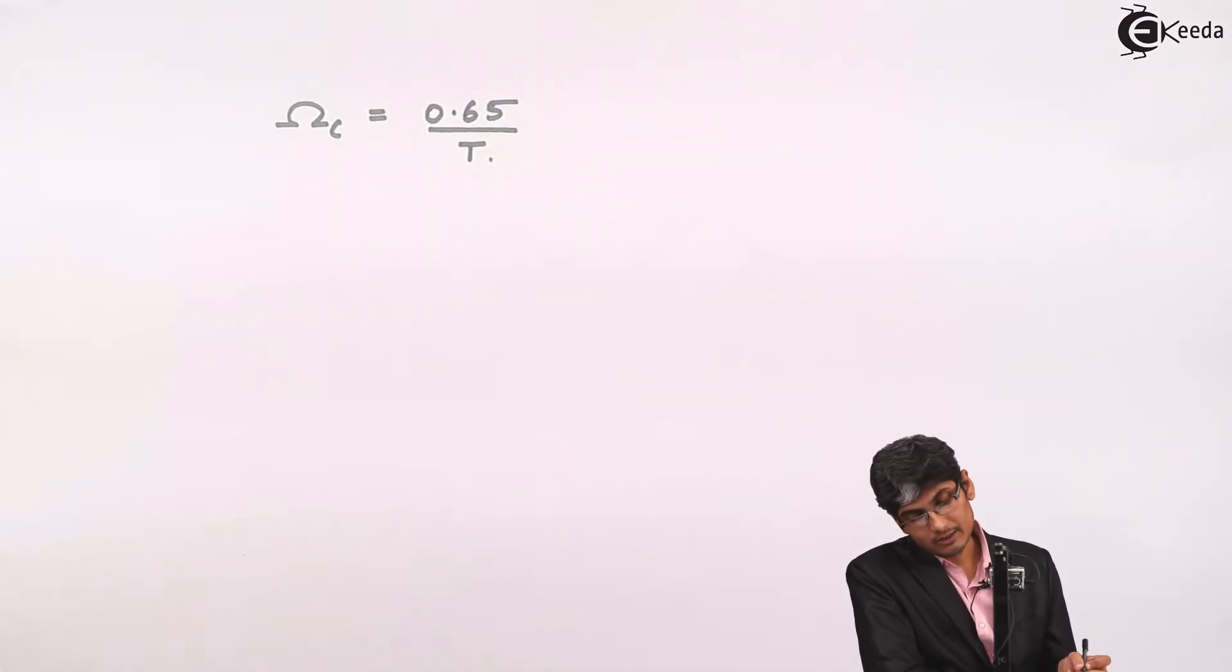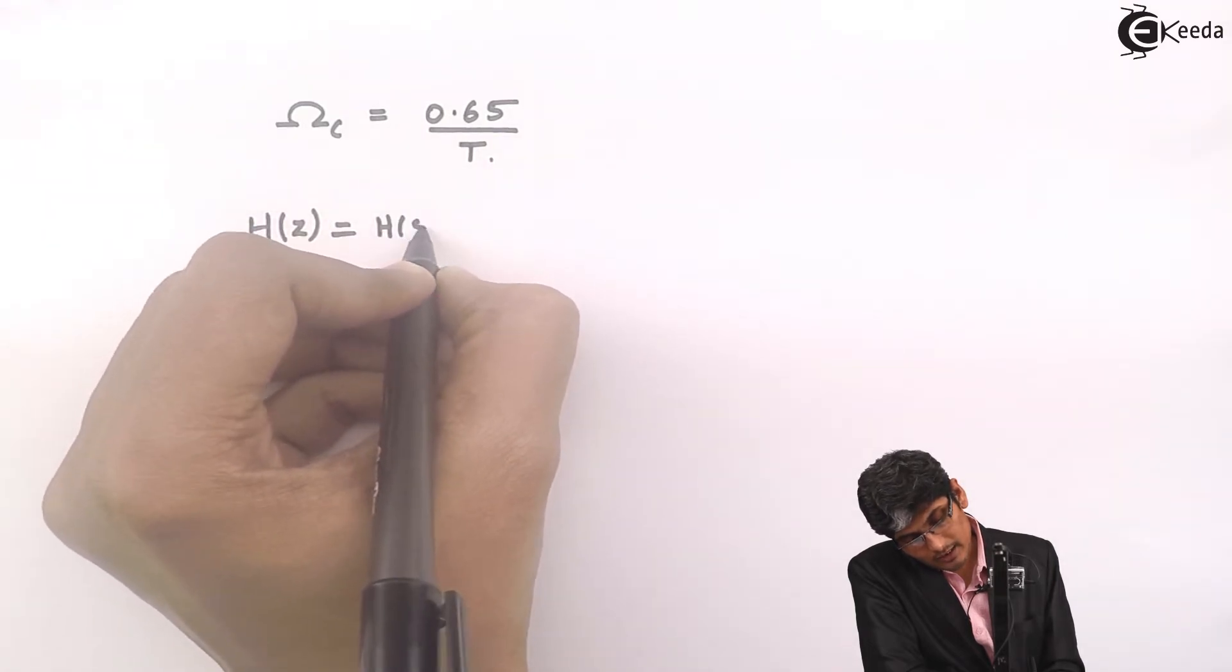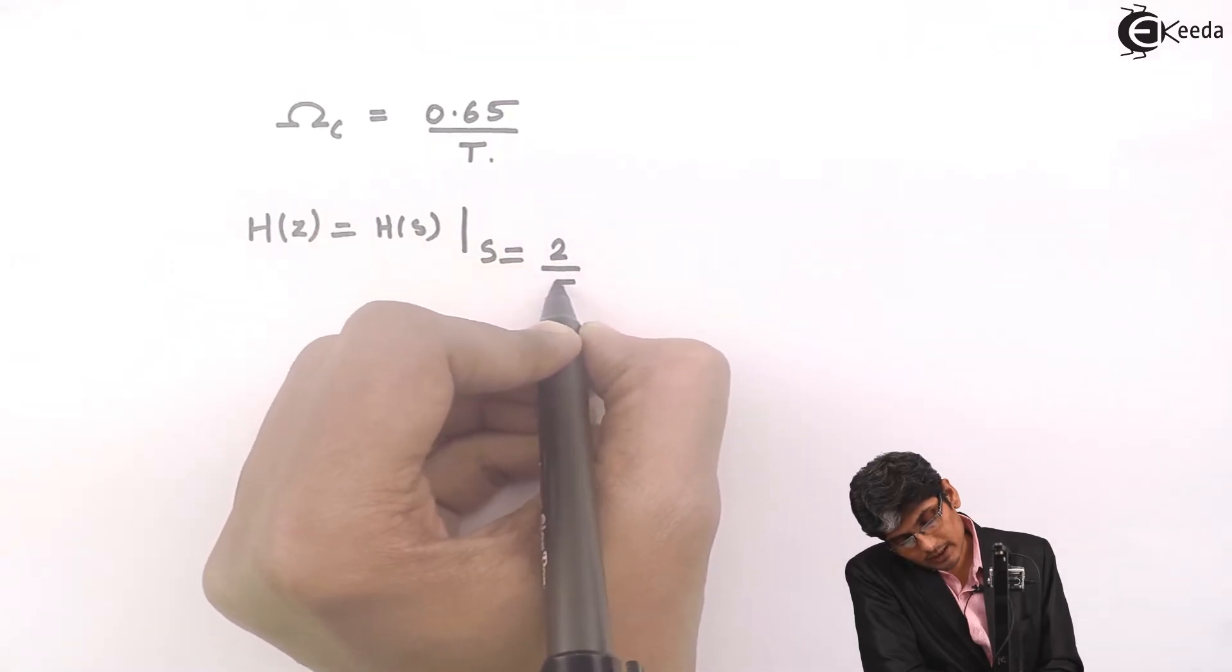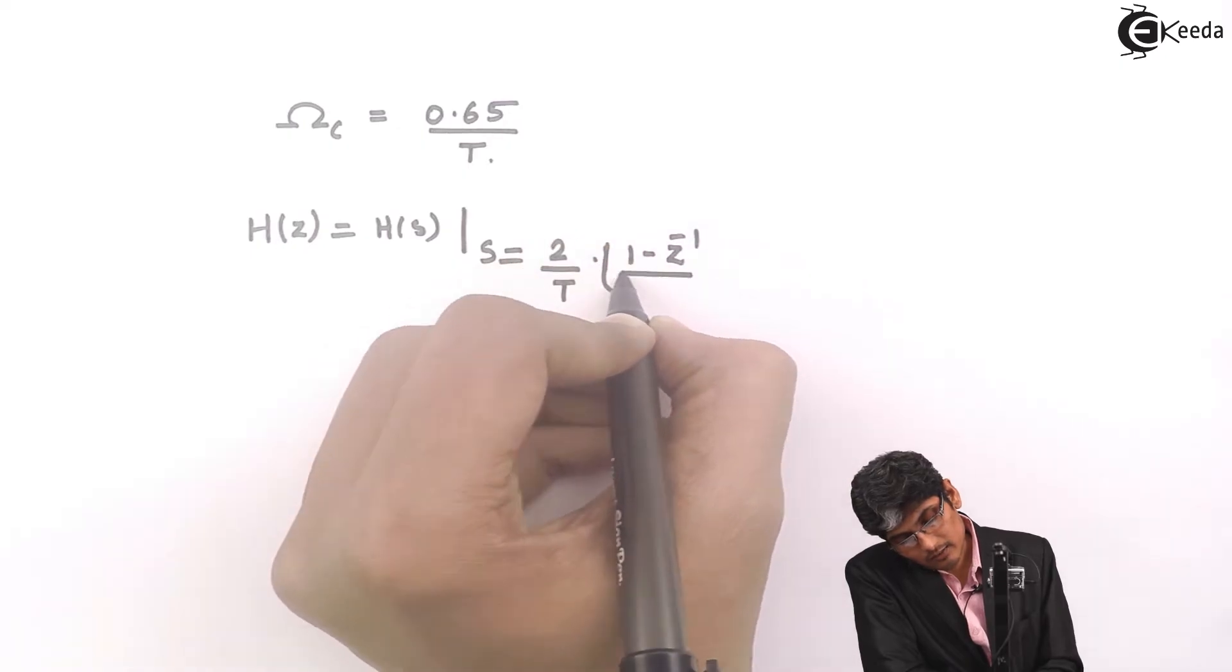Now we are ready to find our H(z). So H(z) equals H(s) where s is equal to (2/T) times (1 - z⁻¹)/(1 + z⁻¹).